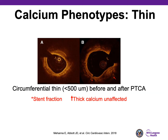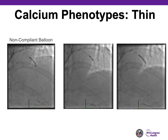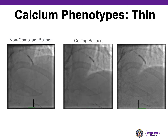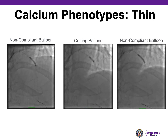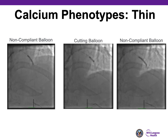Looking at calcium phenotypes — here is a circumferential calcium that is very thin. With thin phenotypes, you could consider PTCA and get a good result. Here's an example of a thin phenotype: first with the non-compliant balloon, there isn't great expansion. We went ahead with a cutting balloon, and it created enough fractures in the thin calcium that we achieved optimal balloon expansion with the subsequent non-compliant balloon. This is one of the reasons why I prefer cutting balloons in these cases.